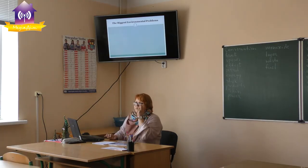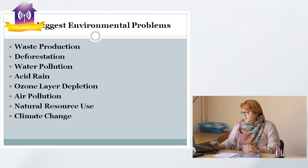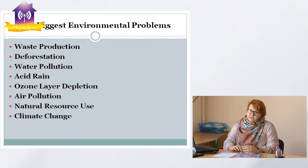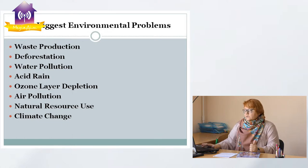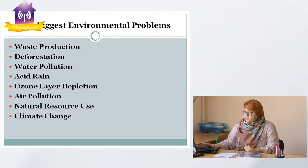Let's sum up: what are the biggest environmental problems? Of course there are a lot of them — some lists give 35, others give 50 main problems — but I think we need less than 10 for our lessons because we are just studying English. So: waste production, deforestation, water pollution, acid rain, ozone layer depletion, air pollution, natural resource use, and as a result of all this — climate change.